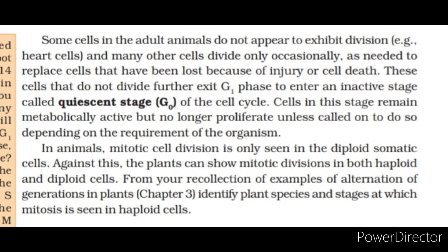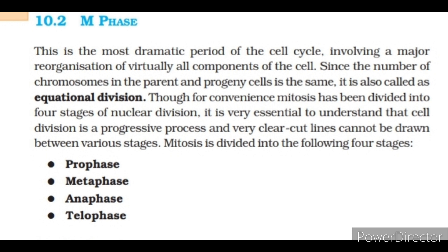In animals, mitotic cell division is only seen in the diploid somatic cells. Against this, plants can show mitotic divisions in both haploid and diploid cells. From your recollection of examples of alternation of generations in plants (chapter 3), identify plant species and stages at which mitosis is seen in haploid cells. The M phase is the most dramatic period of the cell cycle involving a major reorganization of virtually all components of the cell. Since the number of chromosomes in the parent and progeny cells is the same, it is also called equational division. Though for convenience mitosis has been divided into four stages of nuclear division, it is very essential to understand that cell division is a progressive process and very clear-cut lines cannot be drawn between various stages.